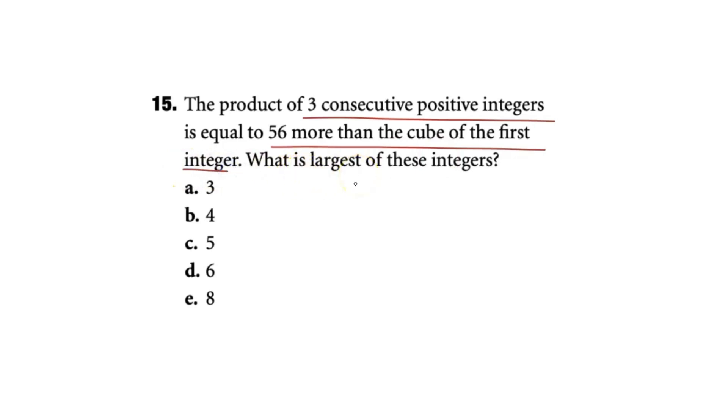So how we want to solve these problems is basically write them out as an expression. The product of three consecutive positive integers can be represented as x as that first positive integer, and then a consecutive integer is x plus 1. We want to find the product of these three integers, and therefore we can write this as x times x plus 1 times x plus 2.